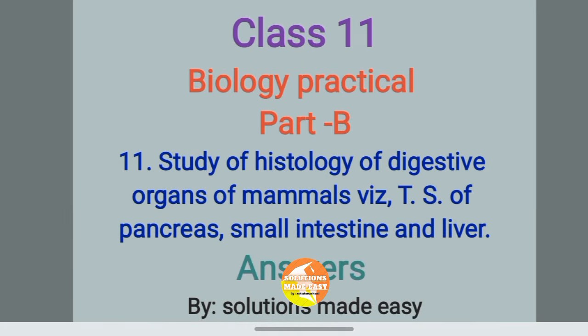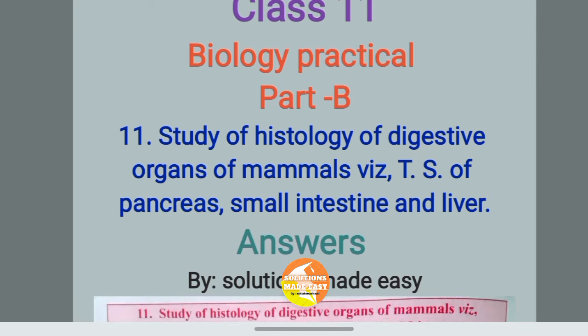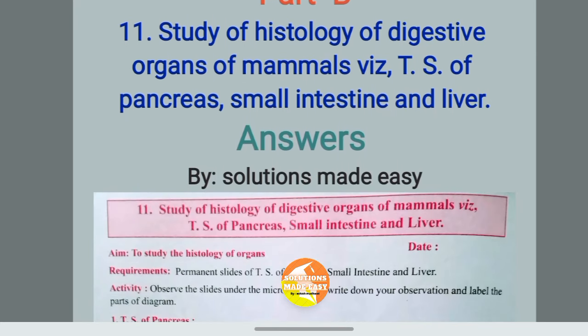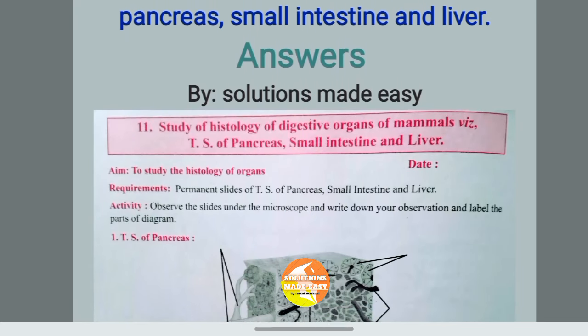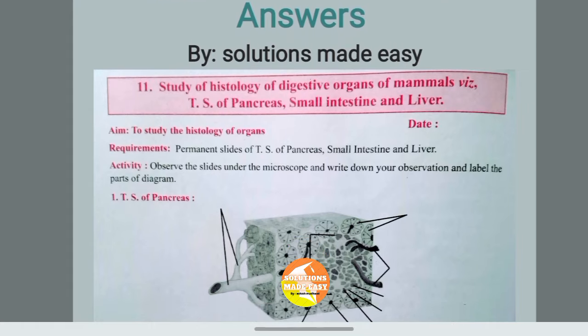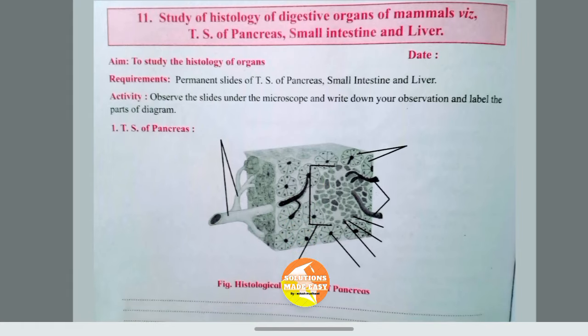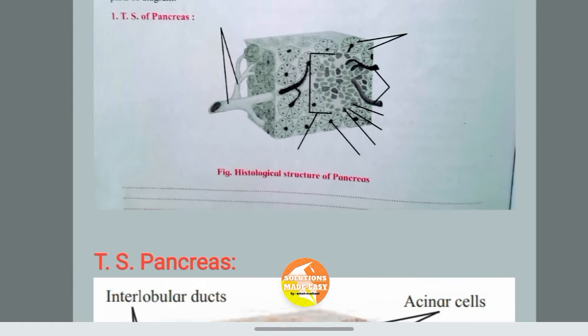Class 11 Biology Practical, Part B, Experiment No. 11: Study of Histology of Digestive Organs of Mammal — Tears of Pancreas, Small Intestine and Liver. All Answers.